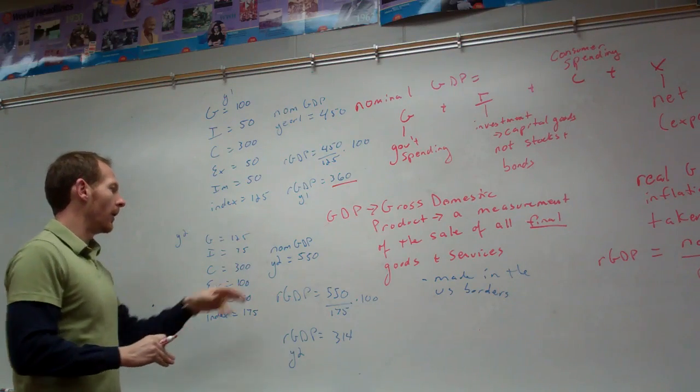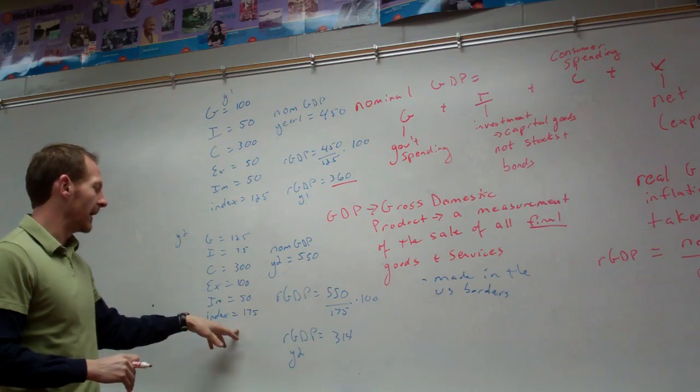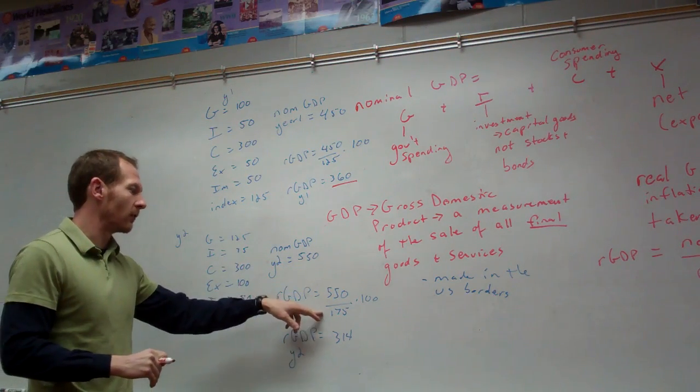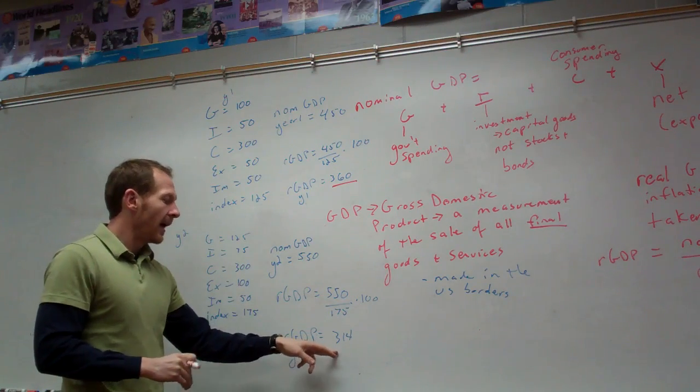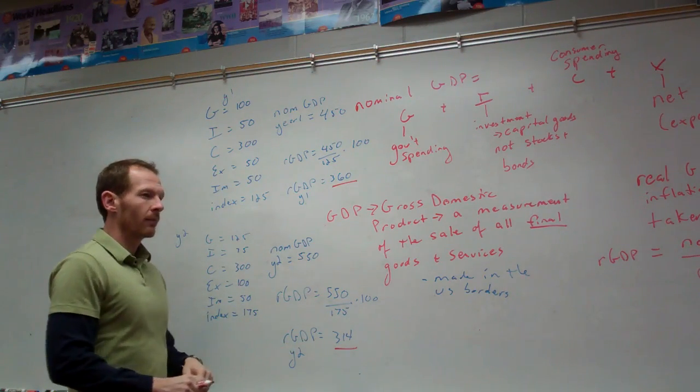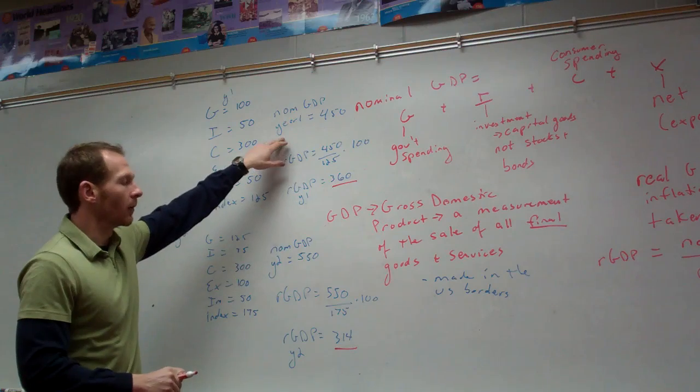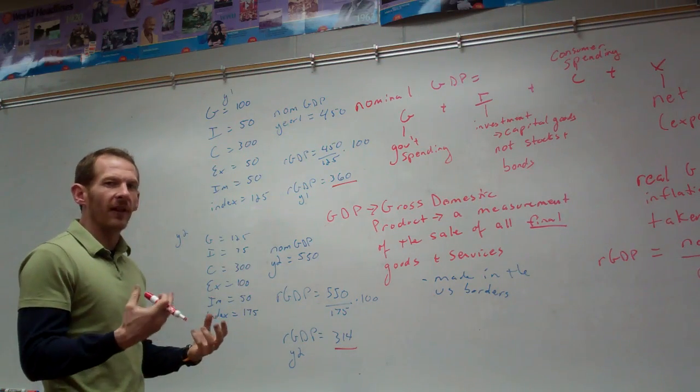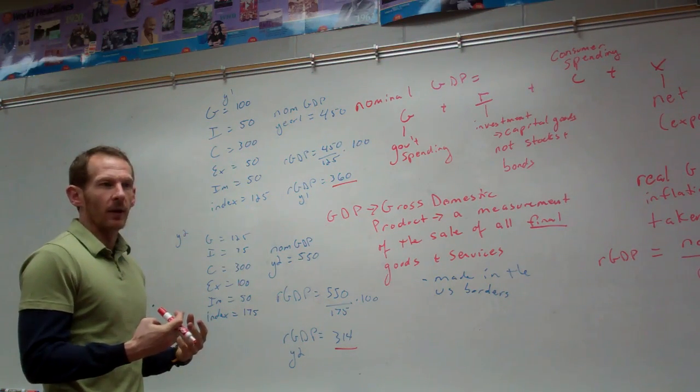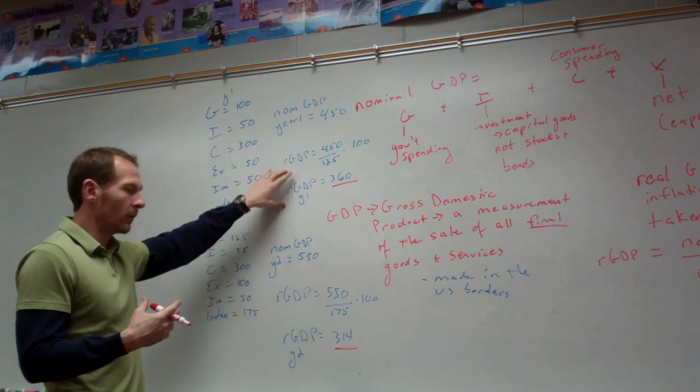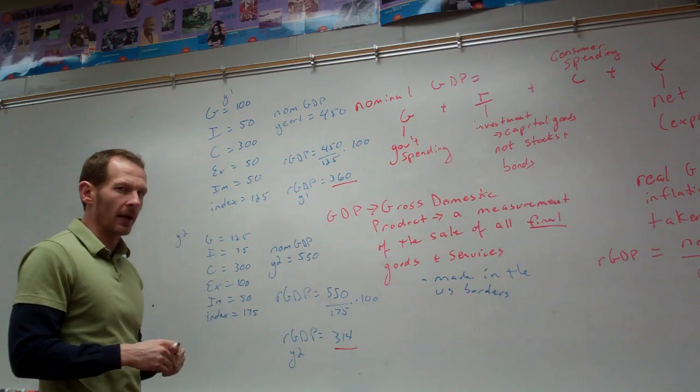For year two, our nominal GDP is 550, our index is 175, so we have 550 over 175 times 100, and that gives us 314. So, actually, even though year one had a lower nominal GDP, once inflation is taken out of it, we see that in real value, year one was better in terms of production.